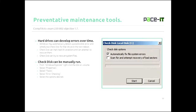Now let's move on to check disk. The Windows operating system can automatically detect some disk errors, and when it does, the next time you reboot the PC it will automatically run check disk. Check disk can mark bad drive sectors, and you can also set it so that it will try to restore or recover those bad sectors. Check disk can also recover some system files automatically.